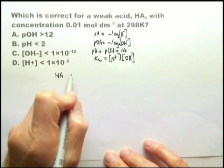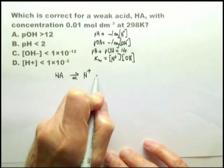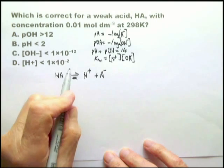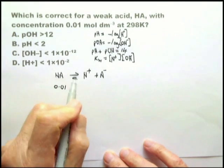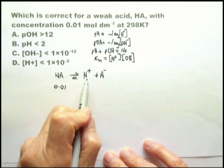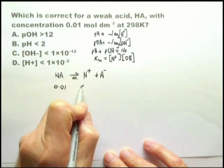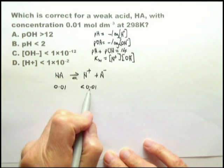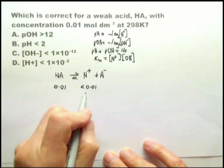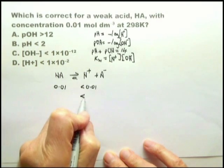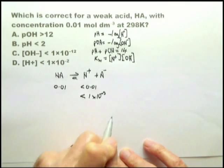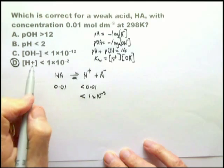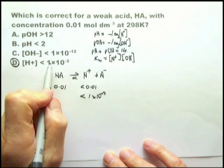Let's look at the weak acid: HA goes to H plus. We know the concentration is 0.01. What is the concentration of hydrogen ions? Well, it's obviously less than this, because it's a weak acid. Therefore, the concentration of hydrogen ions will be less than the concentration of HA. Let's put that in scientific notation as 1 times 10 to the minus 2. Therefore, we can say the answer is D: the concentration of hydrogen ions is less than 1 times 10 to the minus 2.